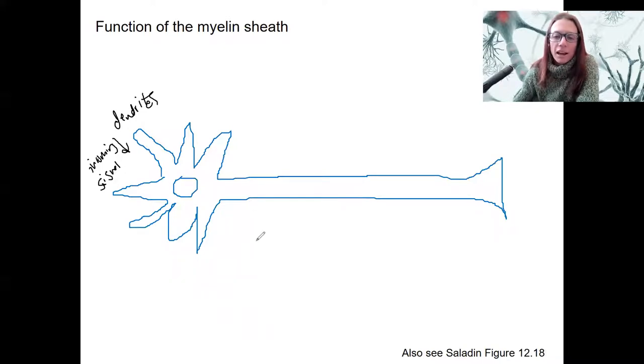And we're going to have an action potential, which is our electrical signal, travel this way towards our axon terminal where we're going to have a synapse with something else.